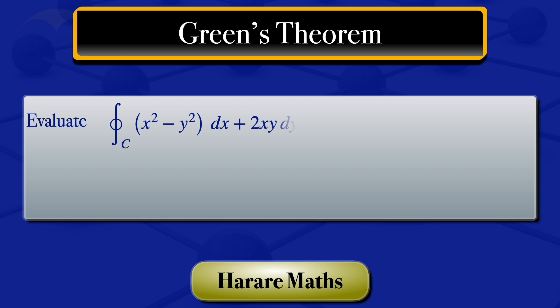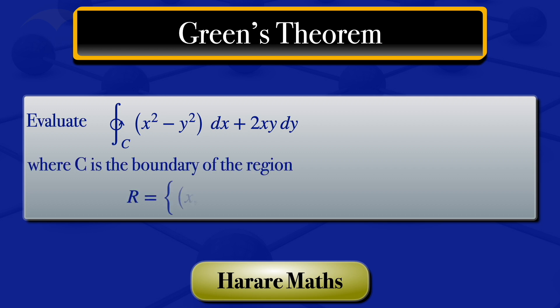In this video, I'm going to evaluate the integral along the closed curve C of x squared minus y squared dx plus 2xy dy, where C is the boundary of the region R, which has points x, y such that x varies from 0 to 1, and y varies from 2x squared to 2x.